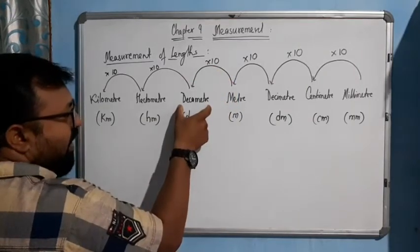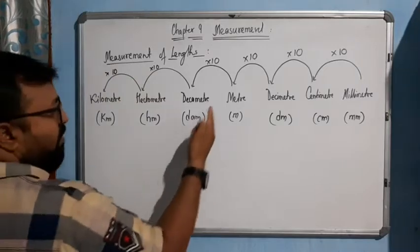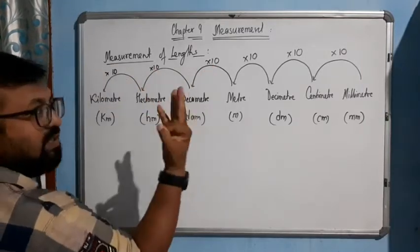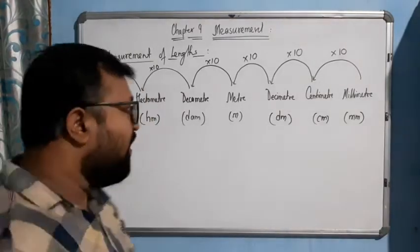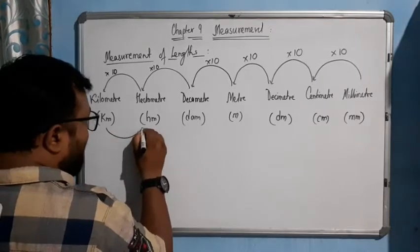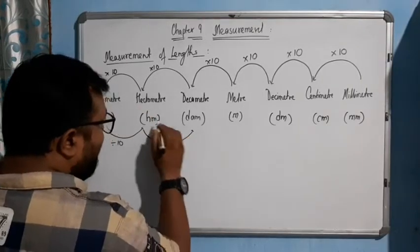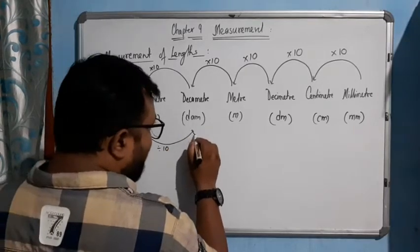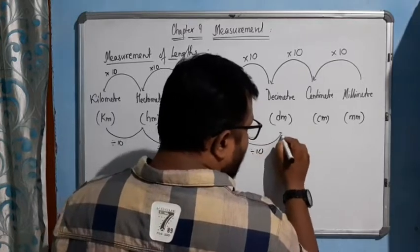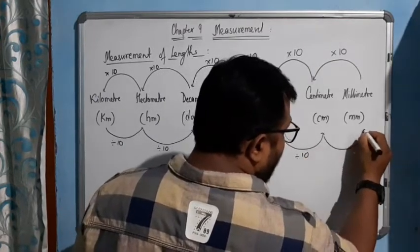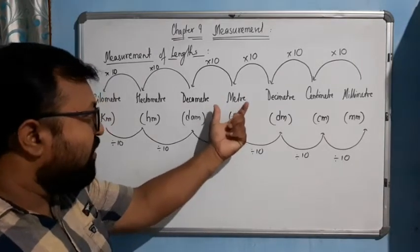Similarly, 10 decameters gives you one hectometer, and from meter to kilometer — three zeros — meaning 1000 meters gives you one kilometer. Now, to decrease the value, divide by 10: one kilometer divided by 10 gives one hectometer, one hectometer divided by 10 gives one decameter, and so on.